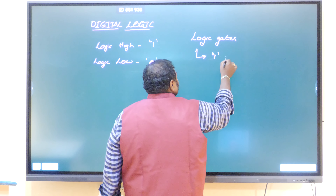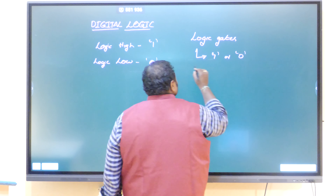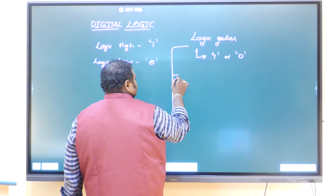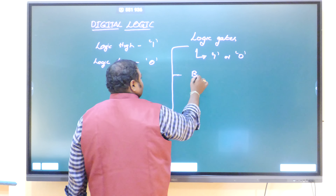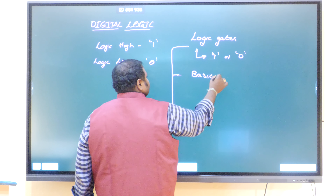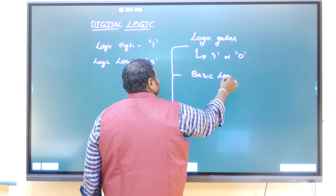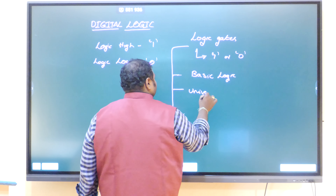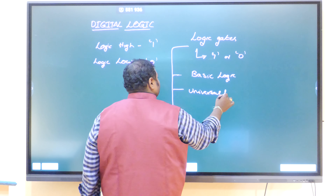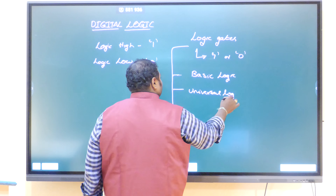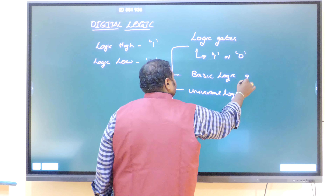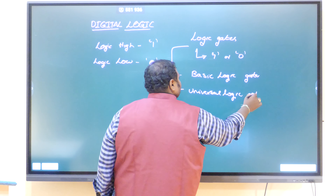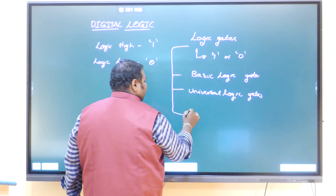Logic gates are classified into basically three types: the first is basic logic gates, the second is universal logic gates, and the third category is special logic gates.